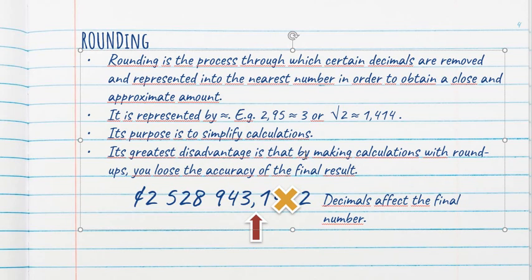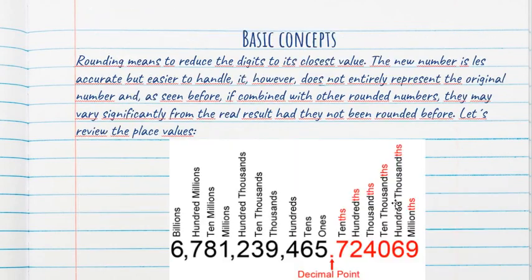It's not the same to add five values that are rounded than five values with as many decimals as possible. The result will not be the same. The final result will not be accurate if you make the calculations with rounded numbers. It's not the same to add three than to add 2.95.